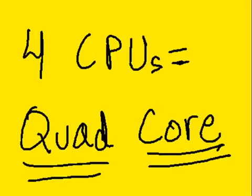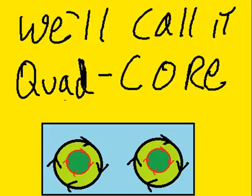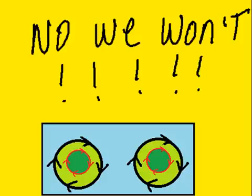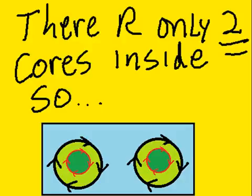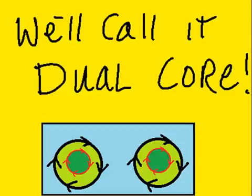Four CPUs? That's quad core. Yes, should we do that? We call it quad core? Should we? No, we won't. There are only two cores inside. Even though they're hyper-threading, there are only two cores inside. So we'll call it dual core, two core.